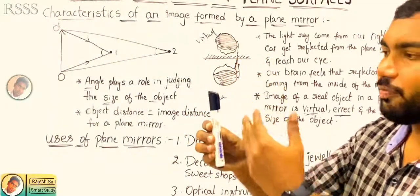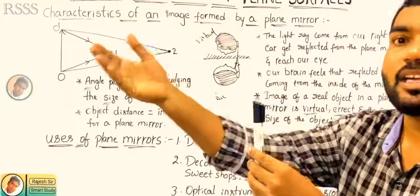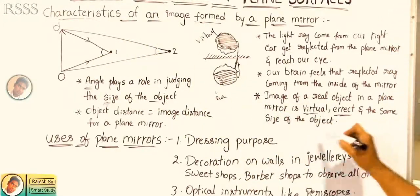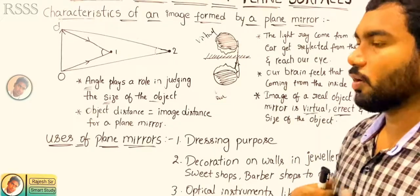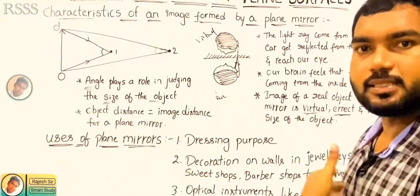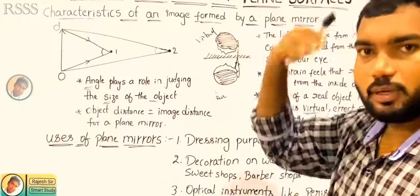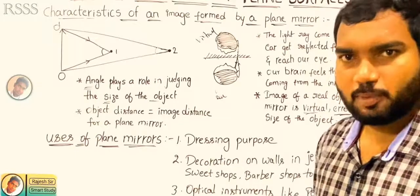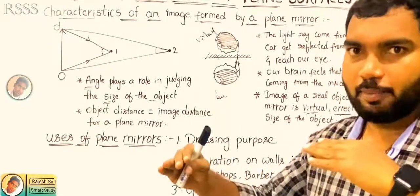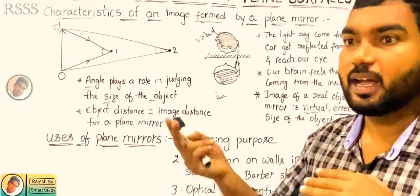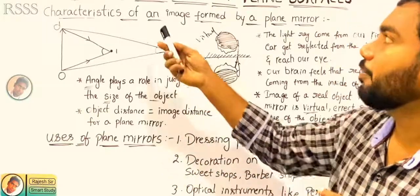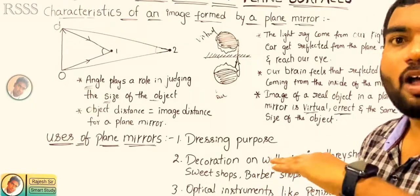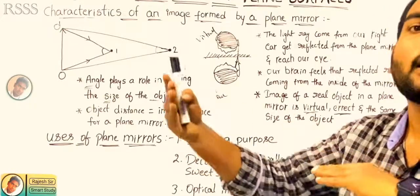The image is virtual and at the same time the same size as the object. It will be the same size. The height of the image will be the same size as the object. If you look at the image, it will be the same size as the object you are placing in front of the mirror.